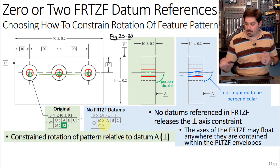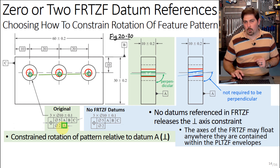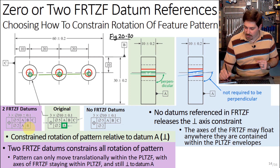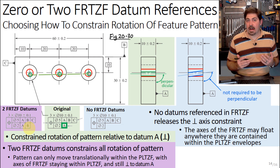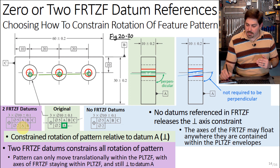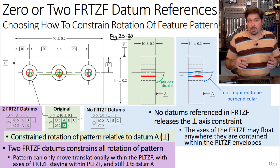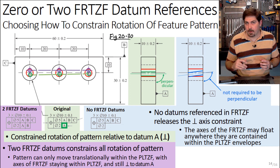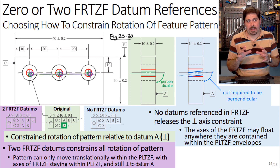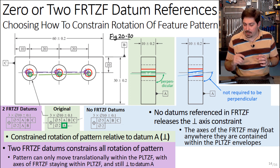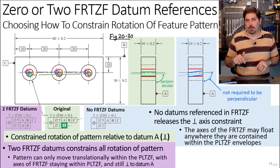What if we add another datum reference — say datum B? Adding datum B constrains all rotation of the FRTZF pattern. The reference to A constrains perpendicularity to that face; the reference to B constrains rotations of the pattern relative to datum B. So now the pattern is free to translate but not to rotate — it can move anywhere within the pattern of the PLTZF tolerance zones but cannot rotate, only translate.